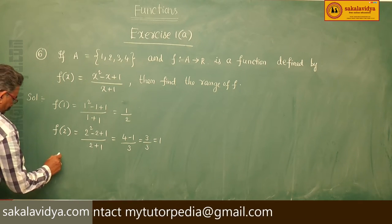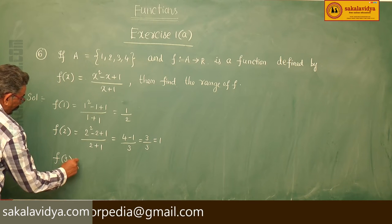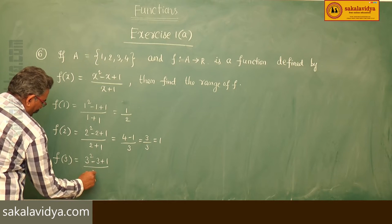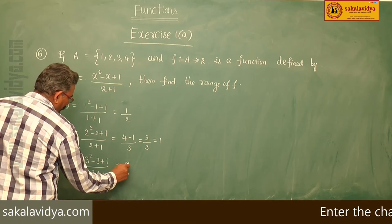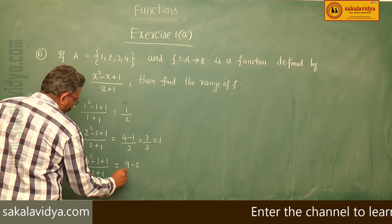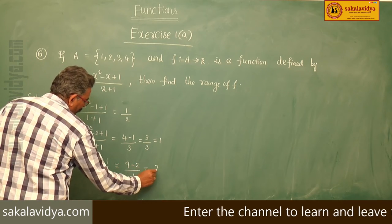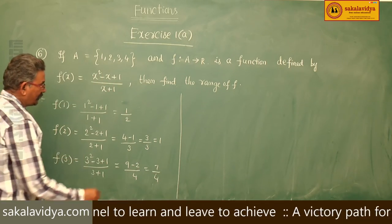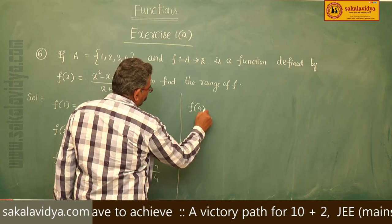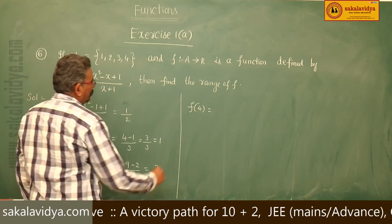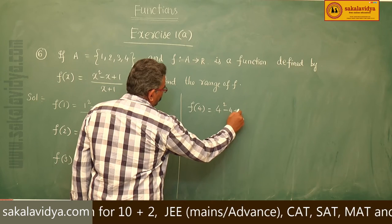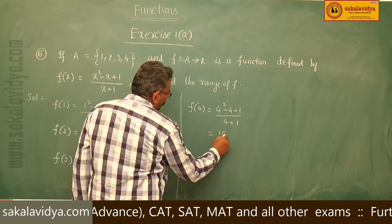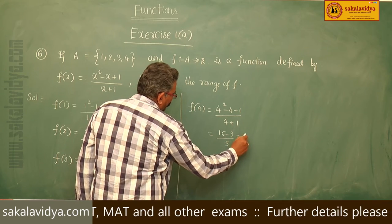Now f(3) = (3² - 3 + 1) / (3 + 1) = (9 - 2) / 4 = 7/4. And f(4) = (4² - 4 + 1) / (4 + 1) = (16 - 3) / 5 = 13/5.